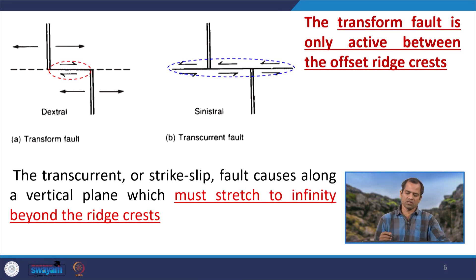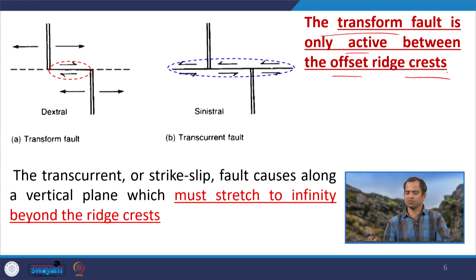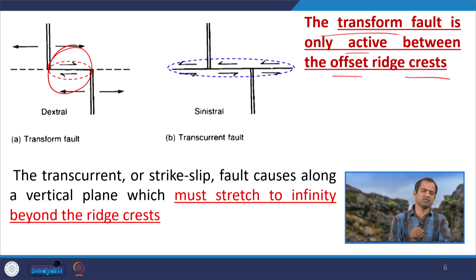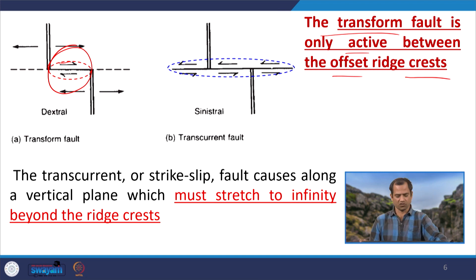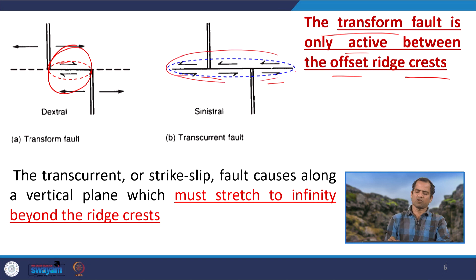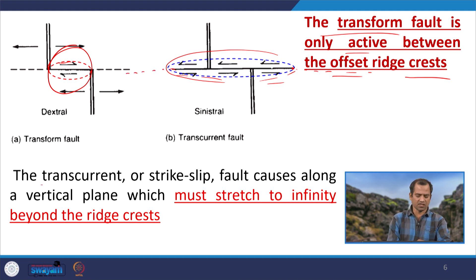The transform fault is only active between the offset ridge crests — that segment is the transform fault and it can be dextral or sinistral. However, if the fault originates beyond the ridge crest and terminates beyond it as well, it is called a trans-current fault. A trans-current or strike-slip fault runs along a vertical plane and must stretch indefinitely beyond the ridge crest.